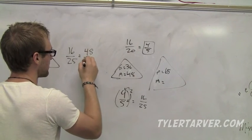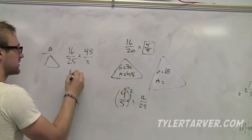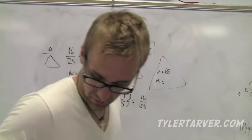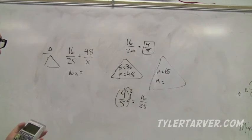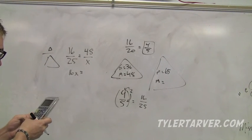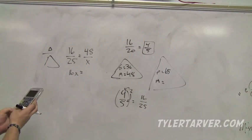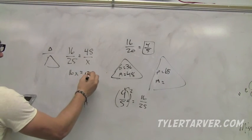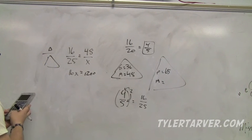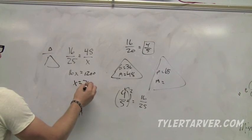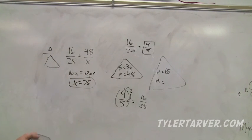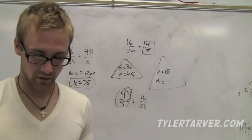16X equals 48 times 25, which is 1200. Divide by 16 is 75. And you're done.